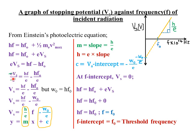Dividing through by the charge of the electron e, we get Vs = hf/e − hf₀/e. Since hf₀ equals the work function W₀, this becomes Vs = (h/e)f − W₀/e. This equation is now in the form y = mx + c, where Vs corresponds to y and frequency f corresponds to x.